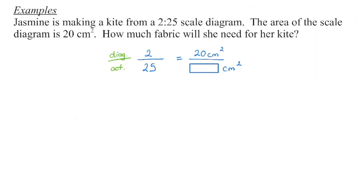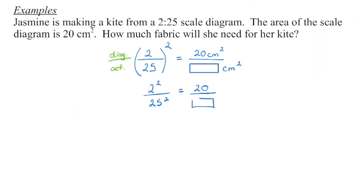Because we're now dealing with area, we're going to be applying that scale factor to both the base as well as the height of our shape. So we're going to take our scale factor and square it. These brackets indicate that the exponent gets applied to both the numerator as well as the denominator, so we're going to go 2 squared over 25 squared. I always tell people to just ignore the units when doing this — otherwise, people accidentally start squaring the unit number, which we're not going to do.